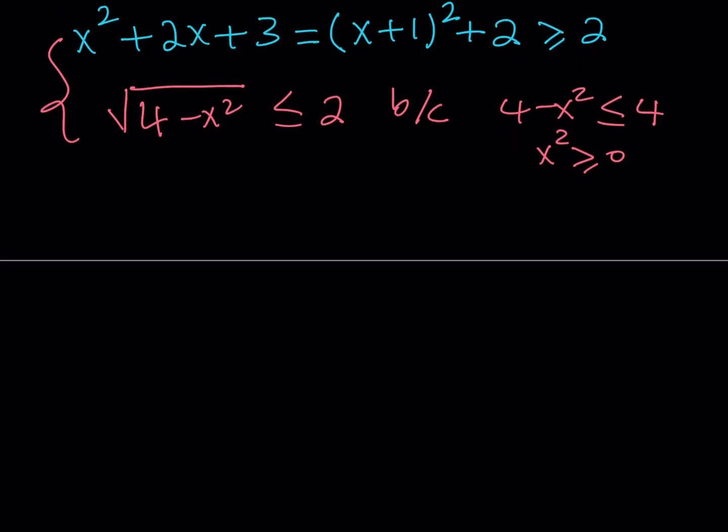So this gives us the two results: x squared plus 2x plus 3 needs to equal 2, and then the square root of 4 minus x squared needs to equal 2 as well. Let's go ahead and take a look at the first one first.